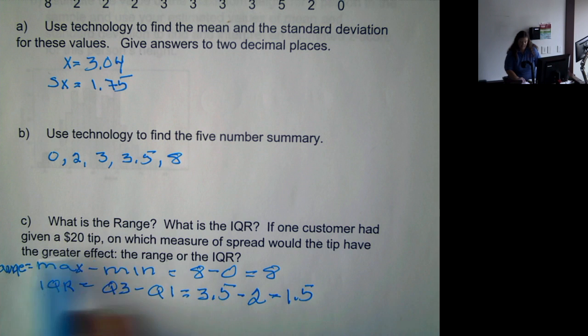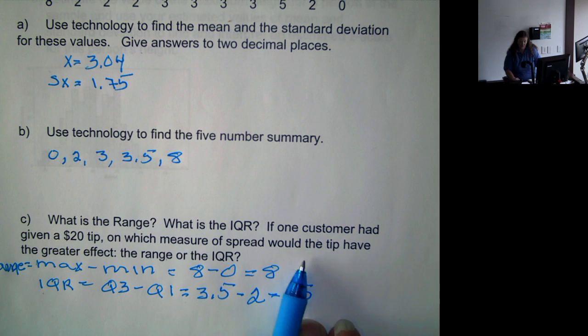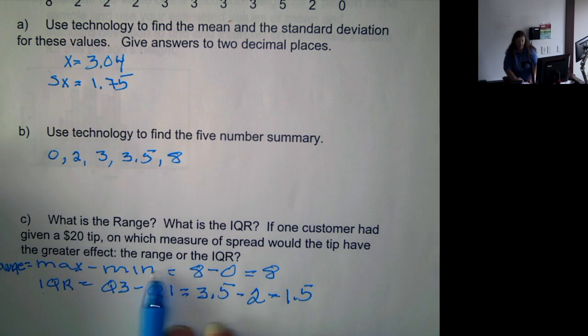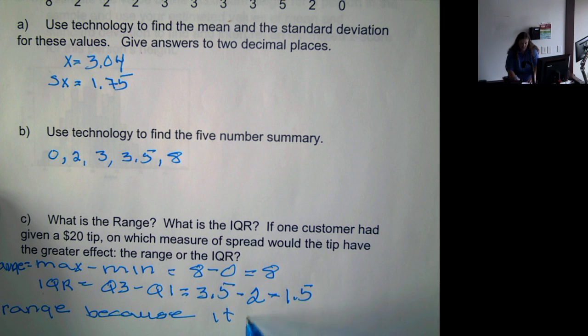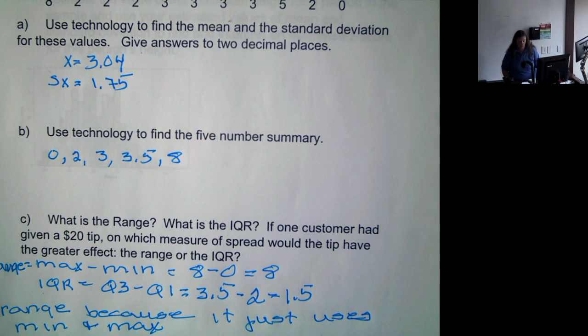Now, if one customer had given a $20 tip, on which measure of spread would the tip have the greater effect, the range or the IQR? Well, it would have the greater effect on the range because it just uses the min and the max. The IQR uses Q1 and Q3, and those don't change if we add a large value in there.